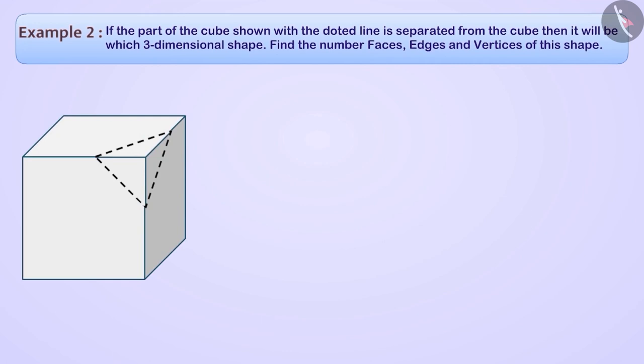Example 2. If the part of the cube shown with the dotted line is separated from the cube, then it will be which three-dimensional shape? Find the number of faces, edges and vertices of this shape.